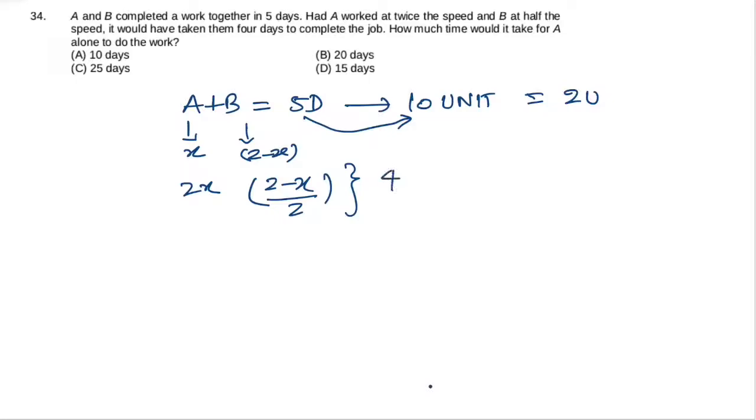So total work they do: 2x efficiency for 4 days gives 8x, plus B does half efficiency for 4 days which is (2-x)/2 times 4. Ultimately this total work done equals 10 units.